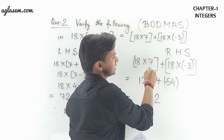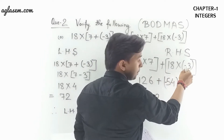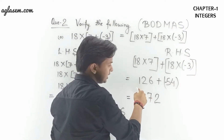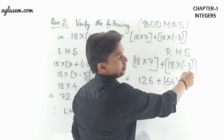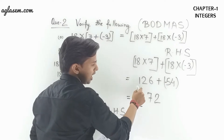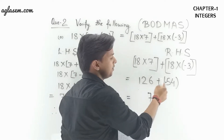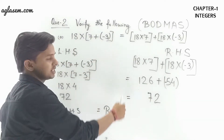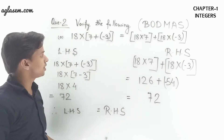For the right hand side: 18 × 7 + 18 × (-3). So 18 × 7 = 126, and 18 × (-3) = -54 because the integer is negative. So 126 + (-54) = 126 - 54 = 72. Both sides are equal. Hence proved, left hand side equals right hand side. This was the solution for question number 2, Exercise 1.3.